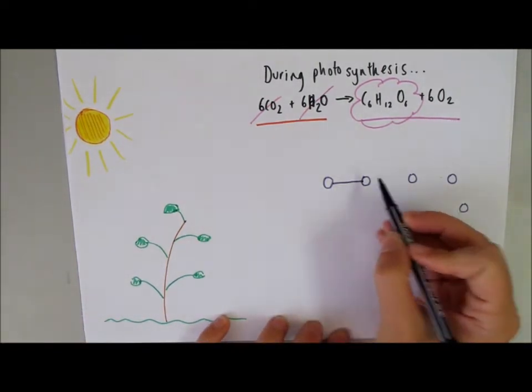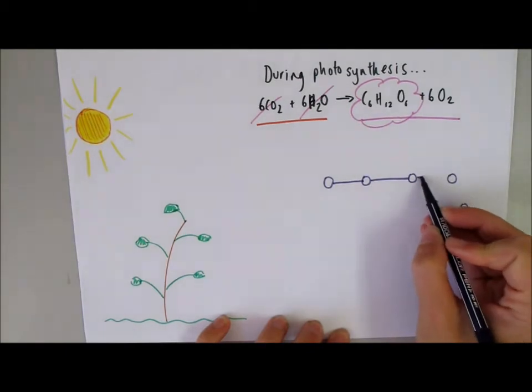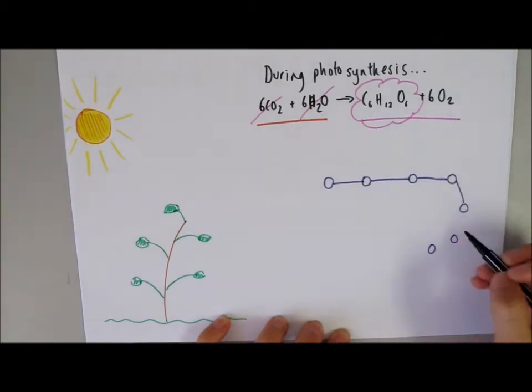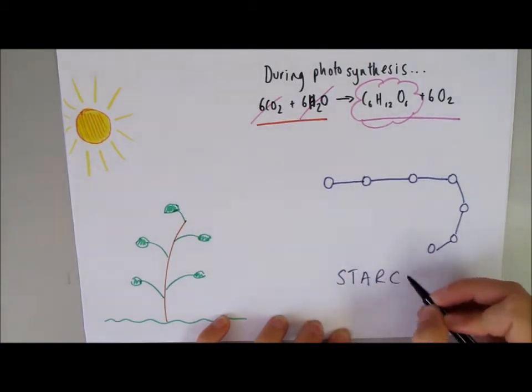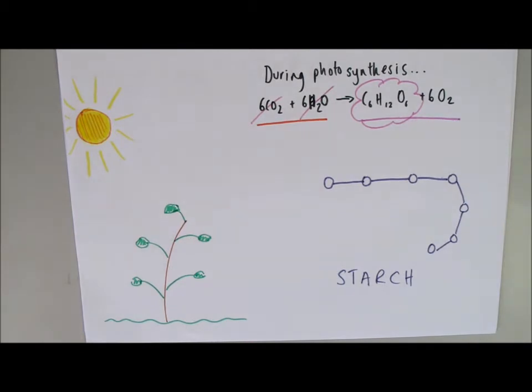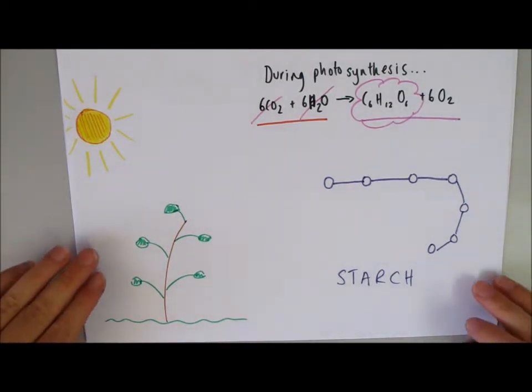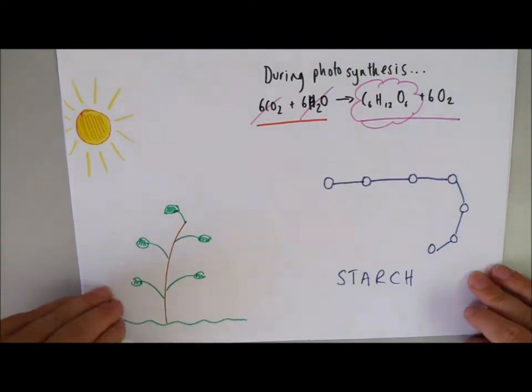Instead, it joins the glucose molecules together, and when we join glucose molecules together, we make starch. Which means that what we can do is we can test whether photosynthesis is taking place by testing for the presence of starch.